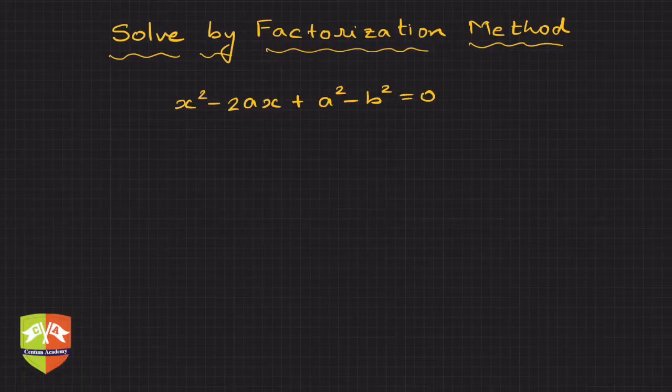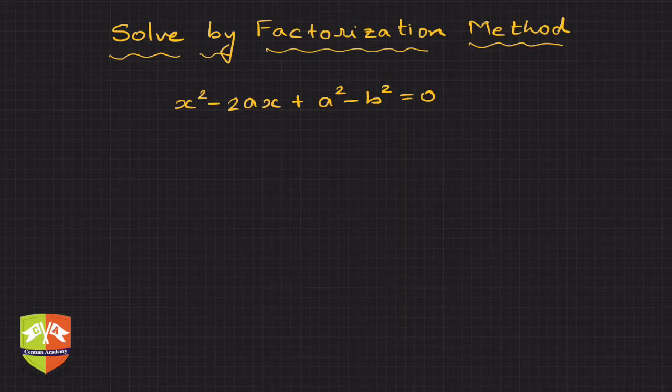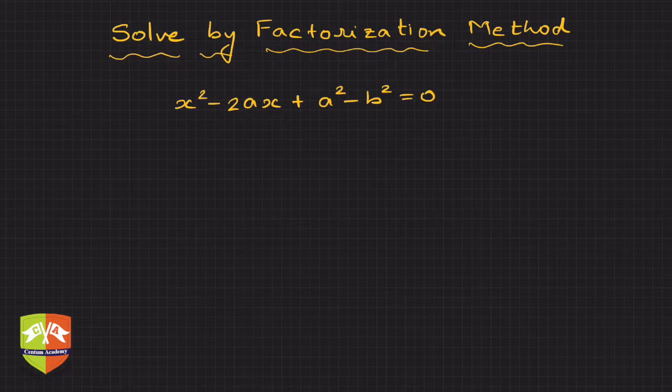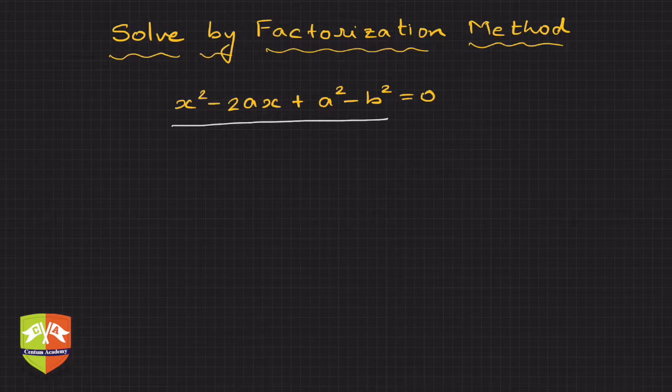Hey hi friends, welcome again to another session on problem solving on quadratic equations. Here we have been given to solve a quadratic equation by the factorization method. So what is the difference between this particular question and whatever we have been doing so far?